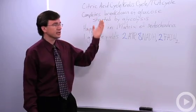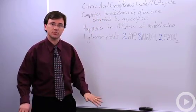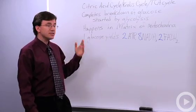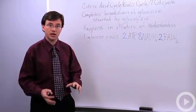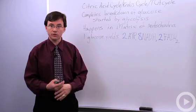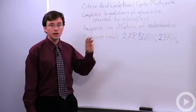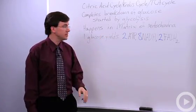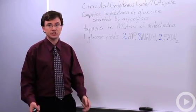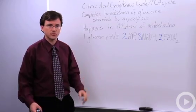It's the final breakdown of glucose after the glucose was initially split in half by glycolysis. It happens in the matrix part of the mitochondria, and the ultimate yield of the Krebs cycle for every one glucose that enters the cell gives you a pair of ATPs, eight NADHs, and a couple of FADH2s.